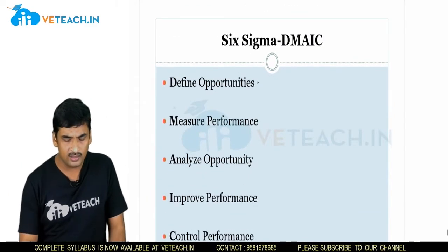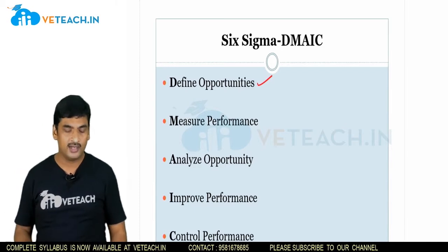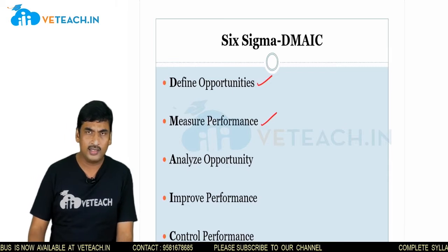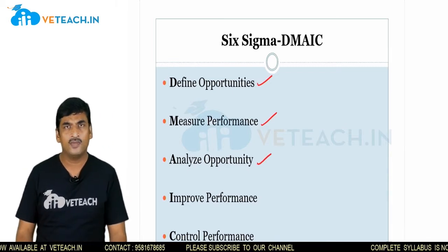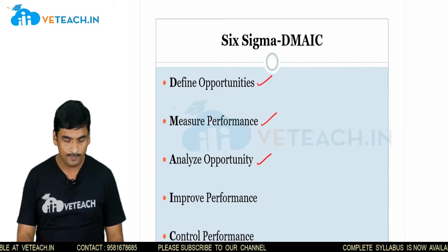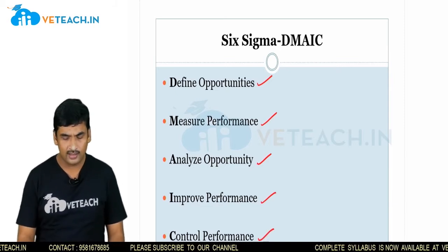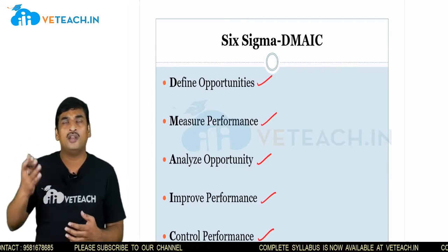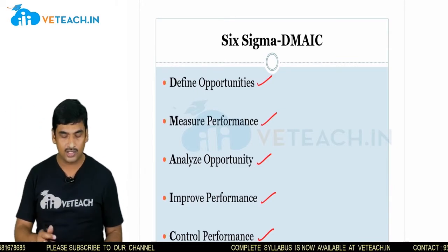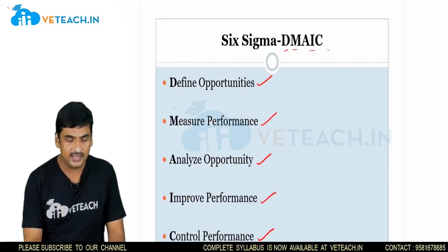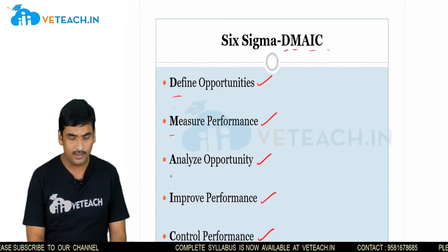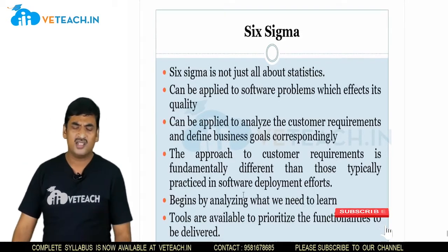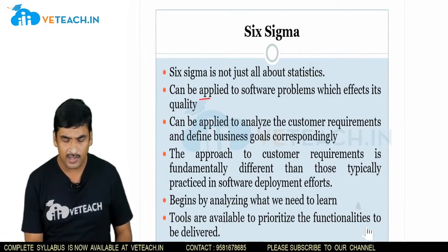The DMAIC methodology stands for: Define the opportunities — identify and define the characteristics or areas of focus; Measure the performance of each opportunity; Analyze the opportunity to find possibilities for improvement; Improve the performance of the opportunity; and Control — define a checkpoint to determine when to stop improvising. So DMAIC: Define, Measure, Analyze, Improve, and Control the performance.